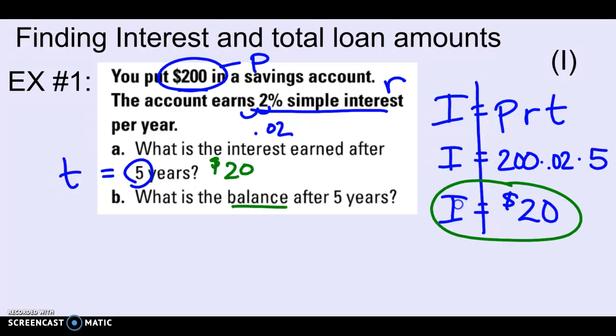But then it says what's now the new balance after those five years? Well, you put in $200. You added an extra $20 in interest. So now you'd be up to $220 total. What about example two?